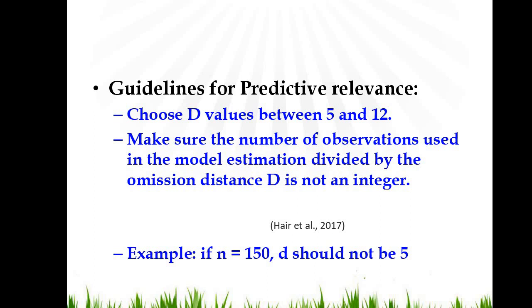Now coming to the guidelines. The omission data point is denoted by D and it can range between 5 and 12. However, make it sure that number of observations used in the model estimation divided by the omission distance D is not an integer.